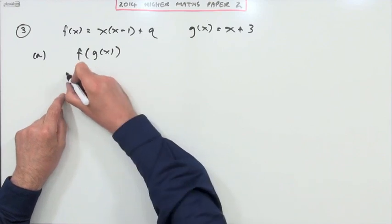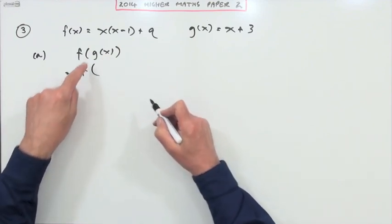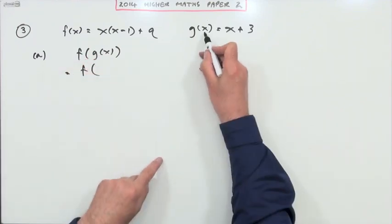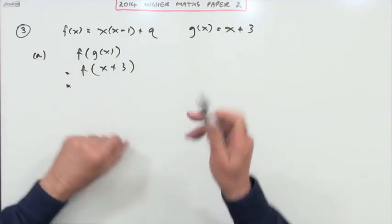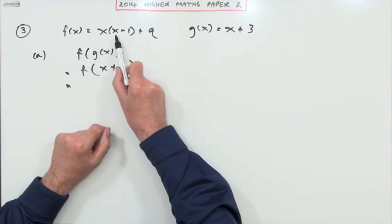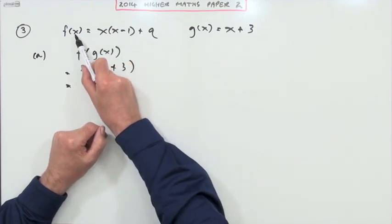Well, that's just f acting on whatever g produces when you feed it x. And g produces an x plus three. Then what does f do? That's what we have to watch. Now, this x just represents what it's being fed.